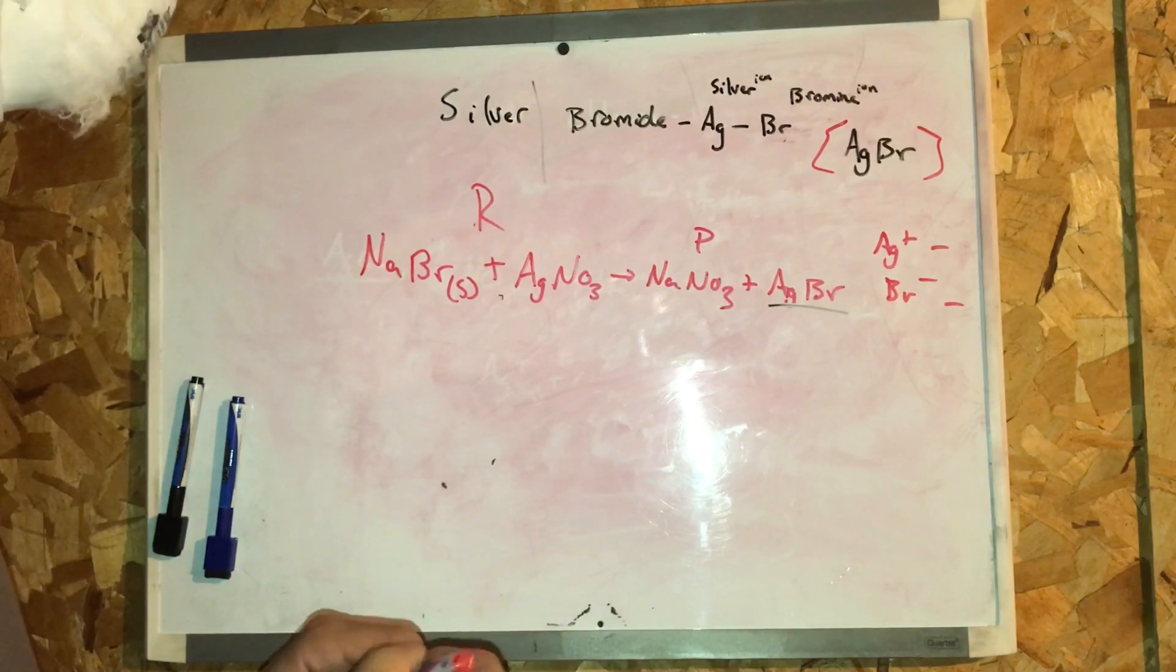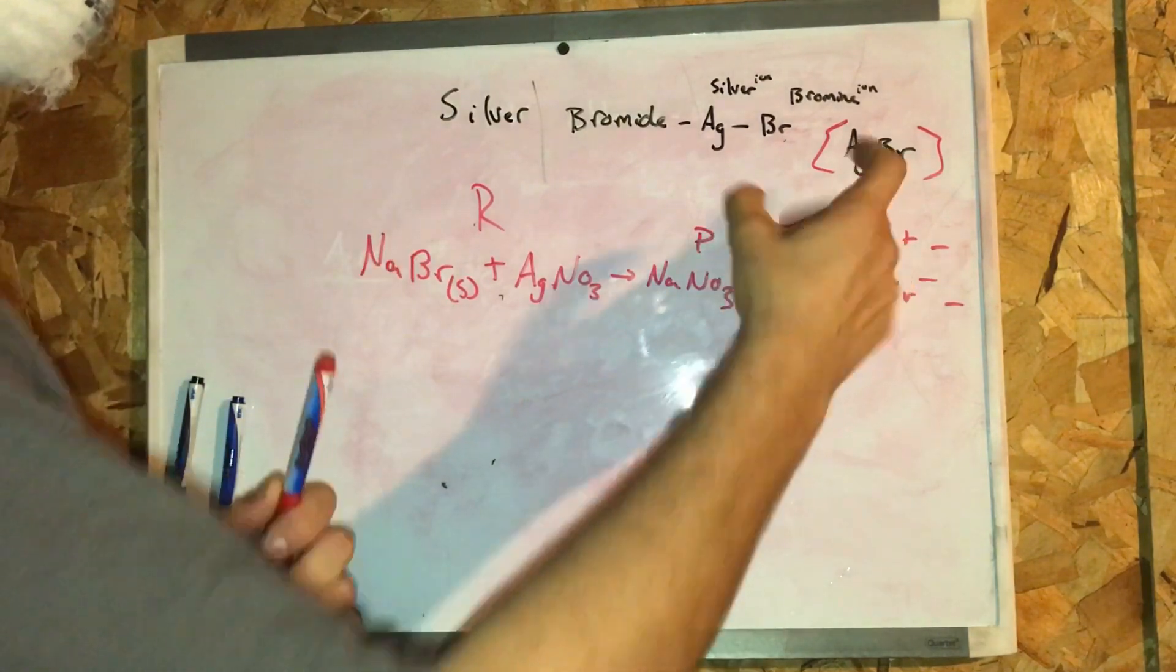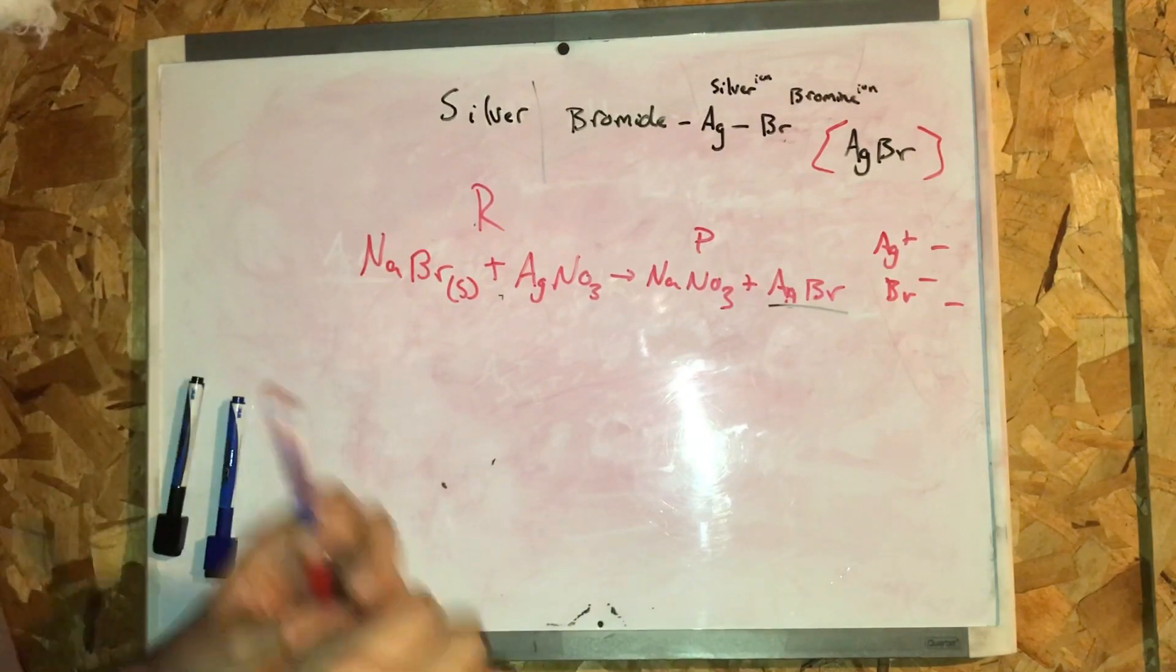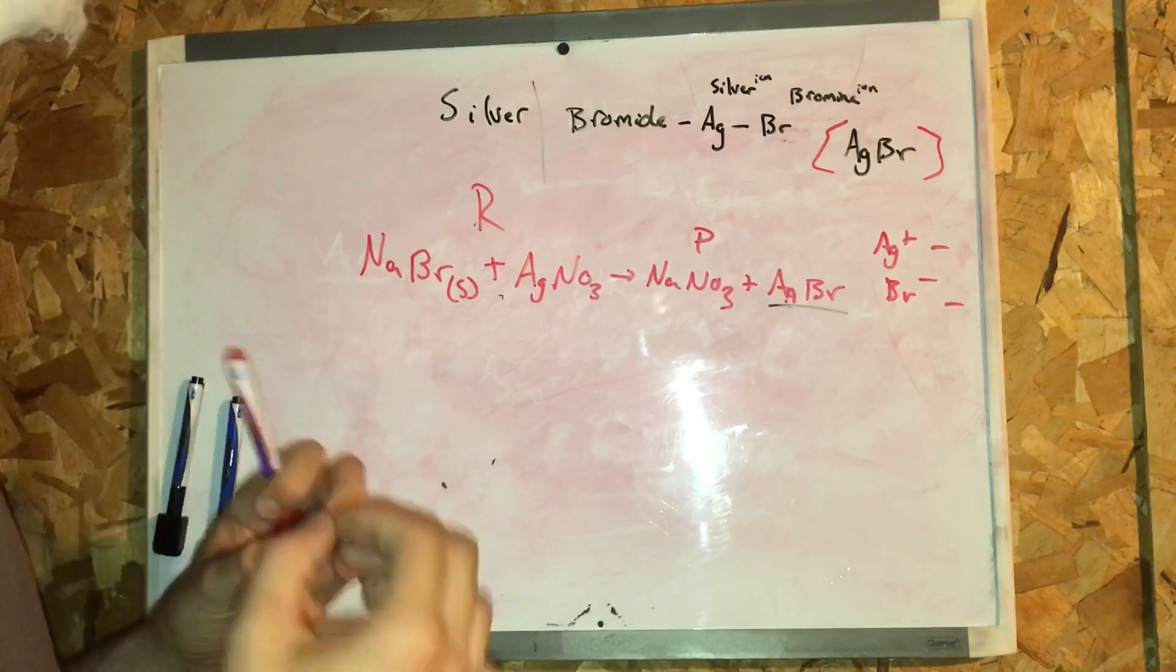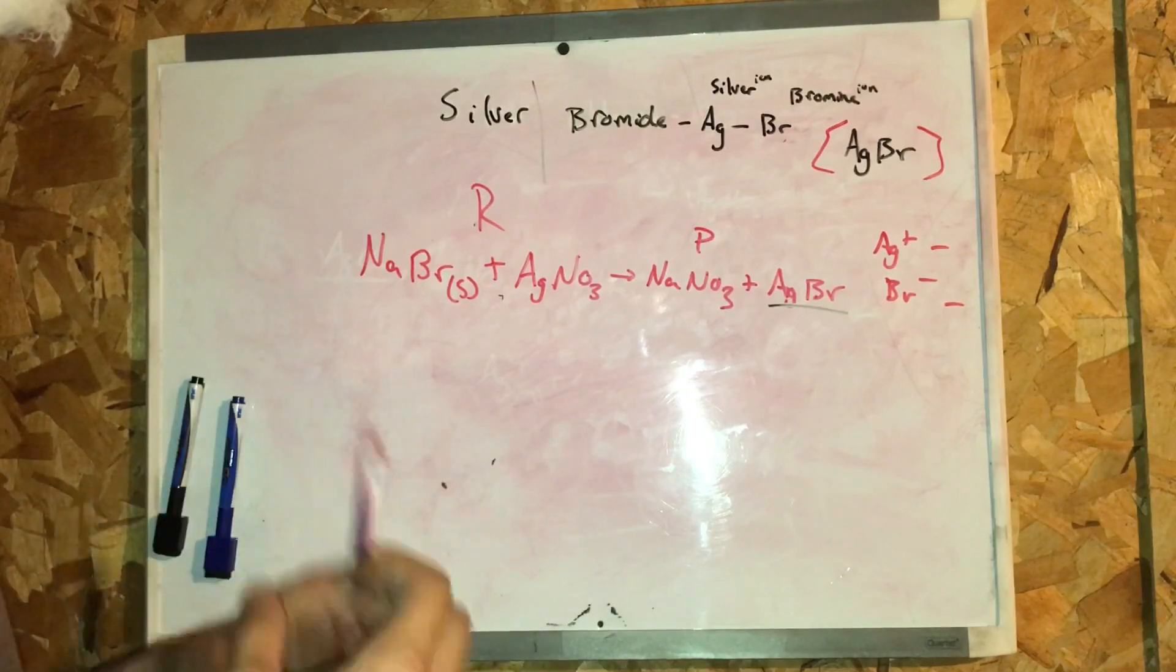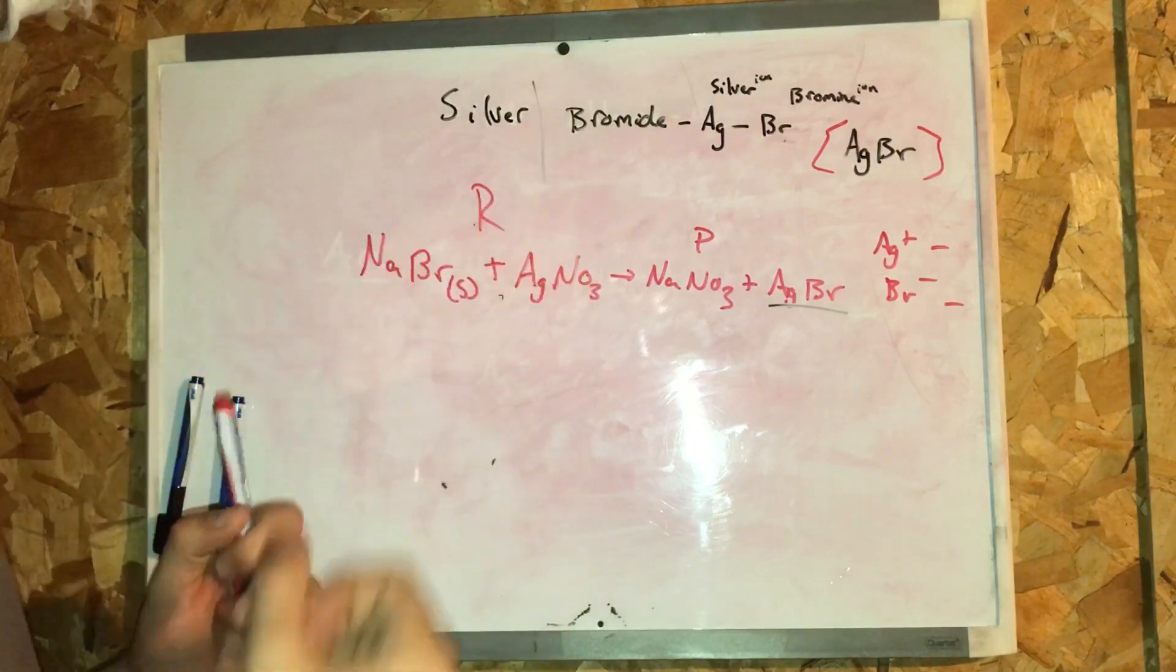Silver bromide, AgBr, is a soft pale yellow, water insoluble salt, well known for its sensitivity to light. So it's not soluble in water.